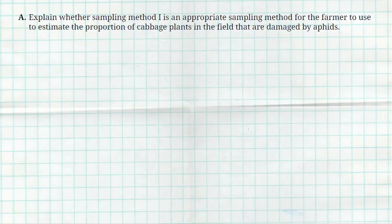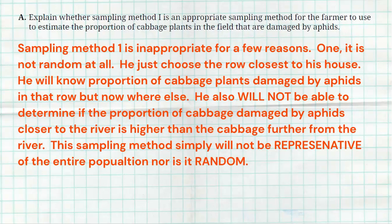Okay, so the first question wants us to explain why sampling method one is not an appropriate sampling method to determine the proportion of cabbage plants that are damaged by aphids. Sampling method one is inappropriate for a few reasons. One, it is not random at all. He just chose the row closest to his house. He will know the proportion of cabbage plants damaged by aphids in that row, but nowhere else. He also will not be able to determine if the proportion of cabbage plants damaged by aphids closer to the river is higher than the cabbage further from the river. This sampling method is not representative at all. It's not going to be a nice representative from the entire field, and it's certainly not random.